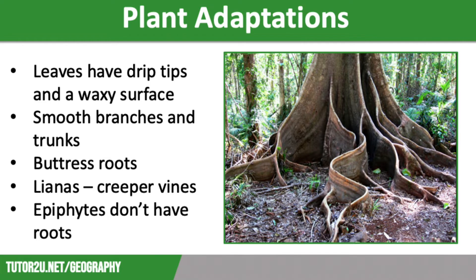Let's start by talking about leaves. Leaves in the rainforest have large surface areas to maximise photosynthesis. This is also helped by the flexible bases that enable the leaves to turn to face the sun. Most leaves have waxy surfaces and drip tips which allow water to drip off the leaves quickly so they do not get waterlogged and rot.